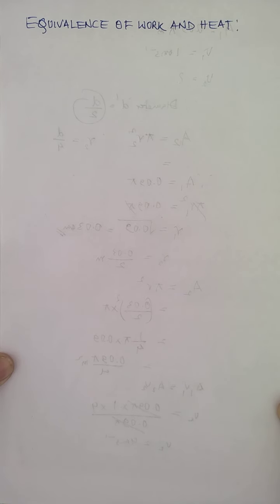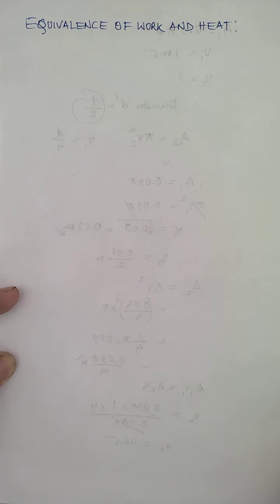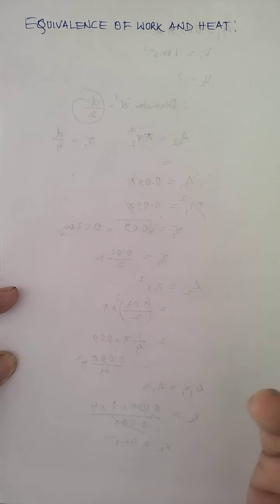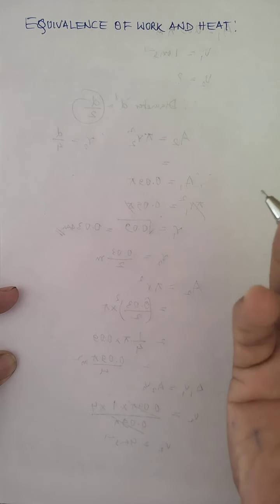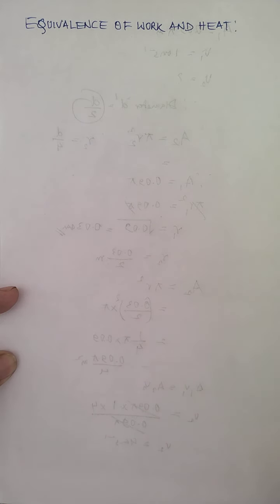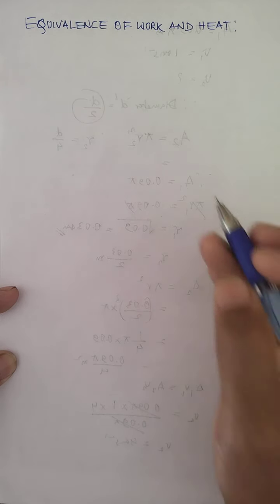Dear children of class 11 science, we now go to the next topic: equivalence of work and heat. Work is said to be done when a force applied on a body produces a displacement. Heat is one form of energy, and energy is the capacity for doing work. Whatever work you do is stored in the form of energy — one such form is heat.